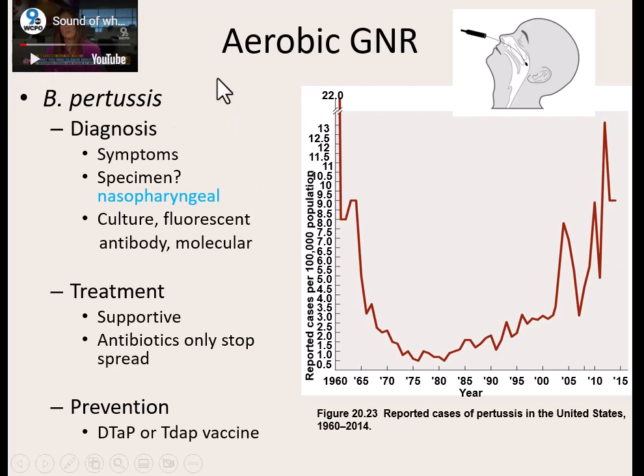Treatment is generally supportive: the patient is probably going to be on some type of oxygen supply and steroids to help open up airways as much as possible, and they'll try to make them as comfortable as possible so hopefully they can get some sleep and recover. Treatment for someone with pertussis is generally supportive — the damage is done. They'll give antibiotics because we don't want to spread it, but it won't help the person. Luckily, it's preventable — we have a vaccine. Pertussis is the P of the DTaP or the P of the Tdap.